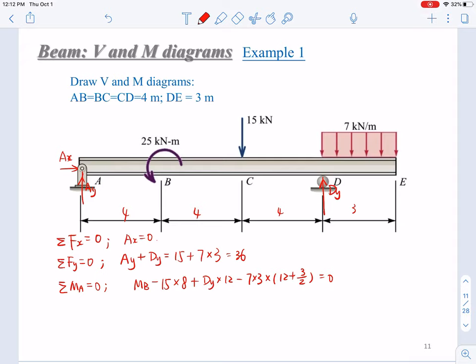From this, we can solve. MB has been given, this is 25. So we can solve that Dy is 31.5 kilonewtons. Then Ay is just 36 minus 31.5, it will be 4.5 kilonewtons.